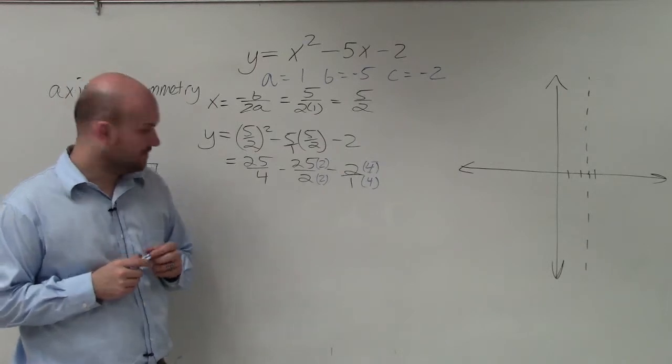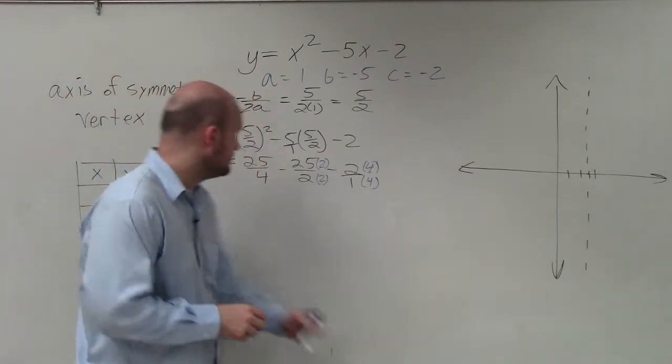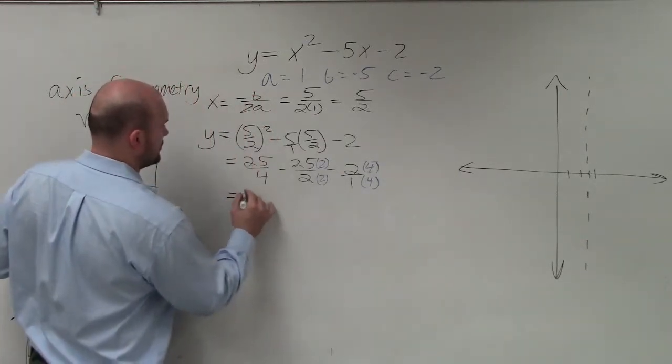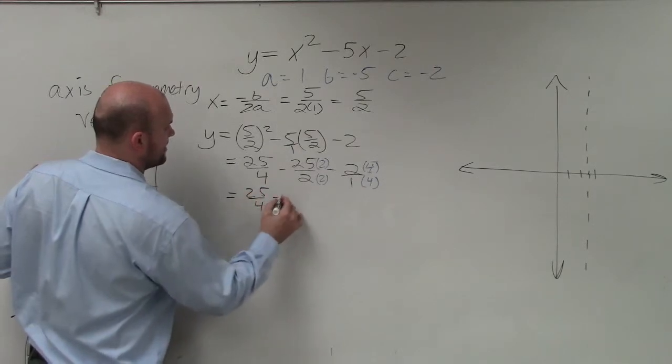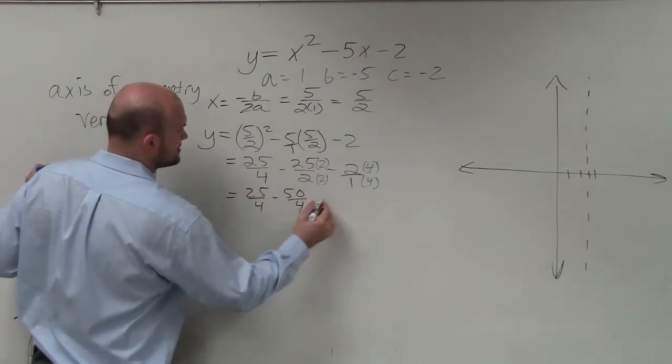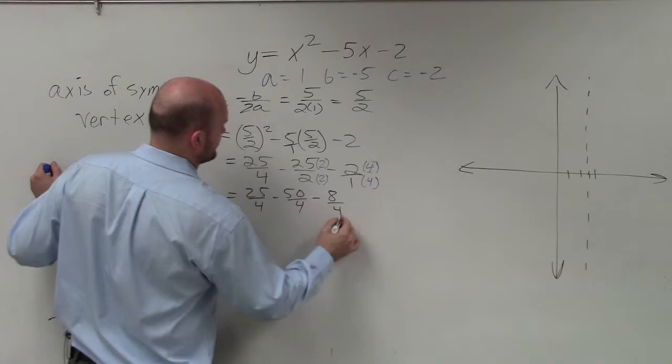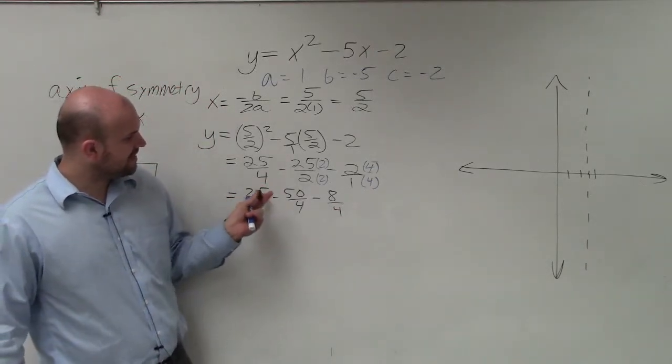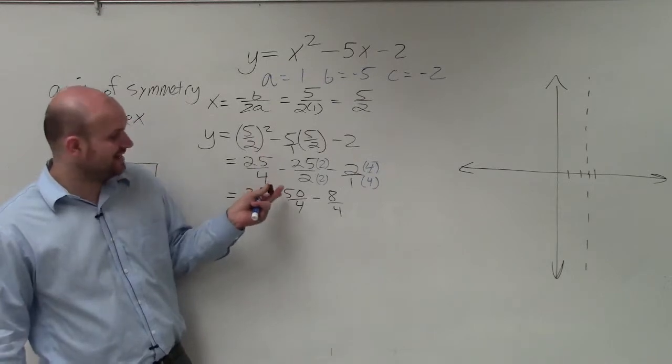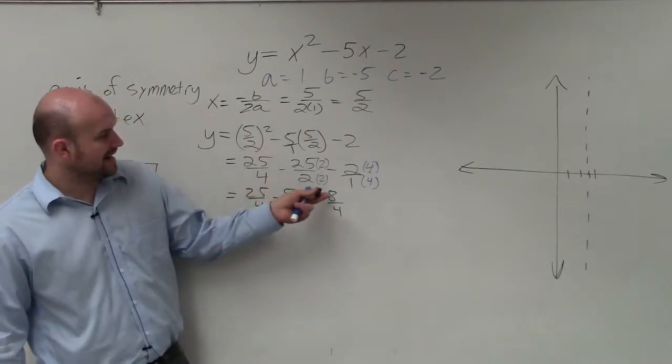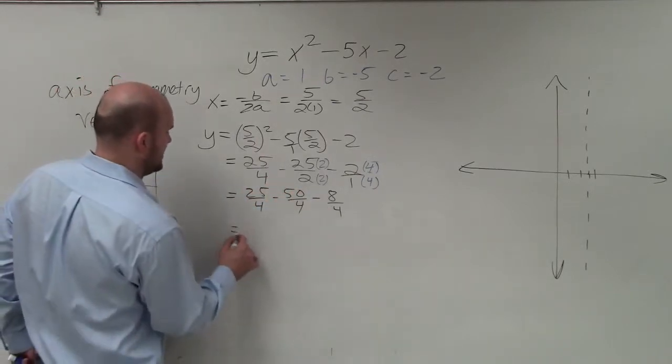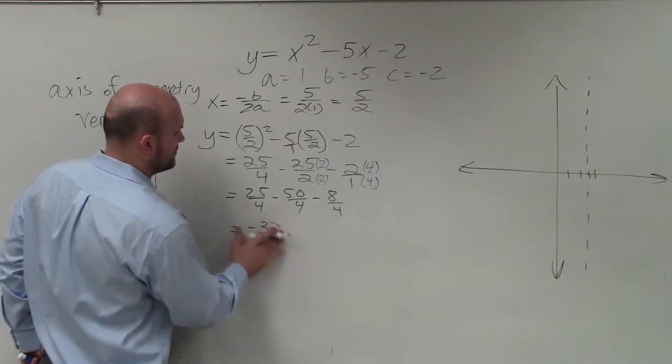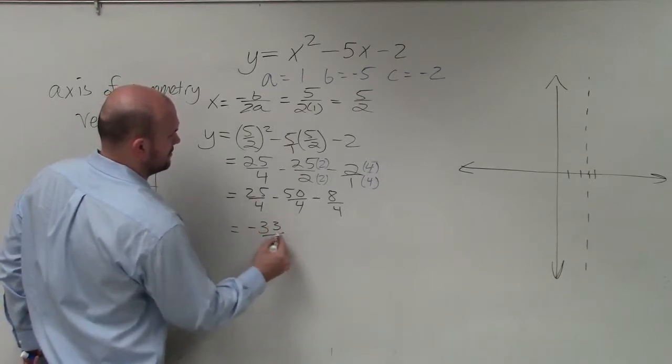Did everybody see that? OK. So now, I can now simplify this to 25 fourths minus 50 fourths minus 8 fourths. Well, 25 fourths minus 50 fourths is a negative 25 fourths minus 8 fourths is going to equal a negative 33 fourths.